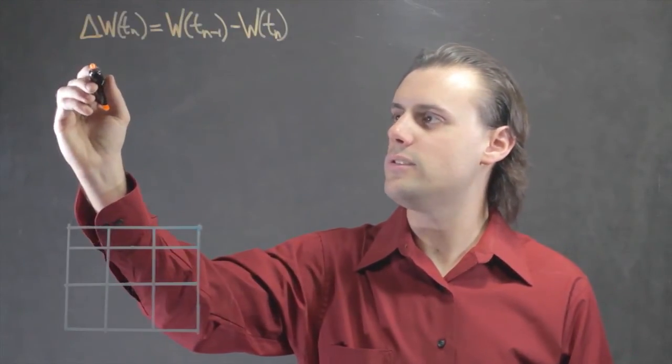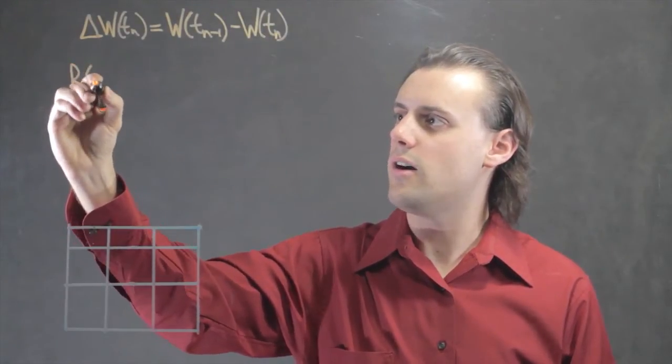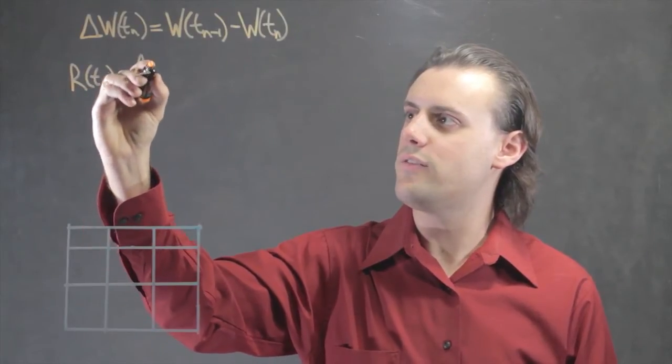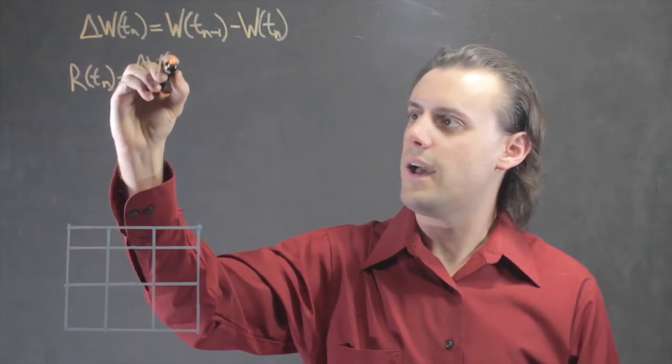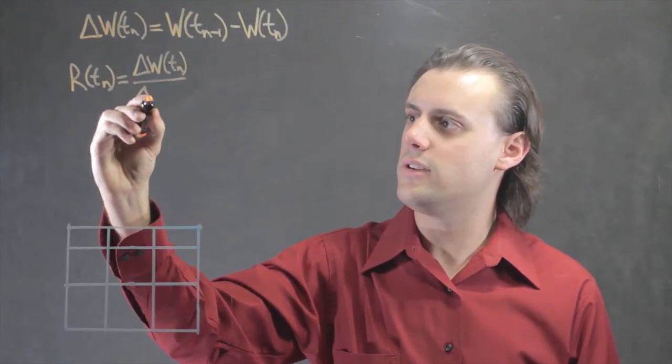Once you have this, you can actually calculate the rate, say R, at Tn, by taking that difference at Tn and dividing it by the difference in time.